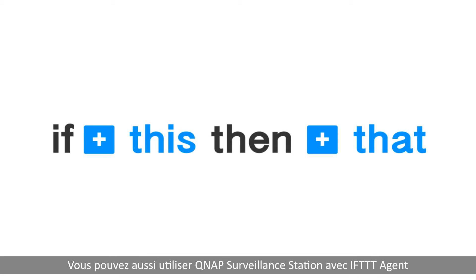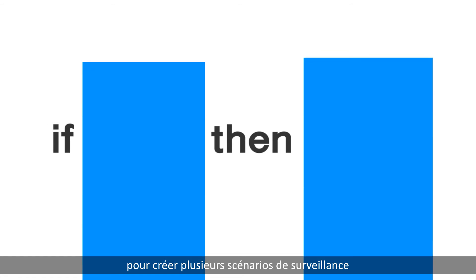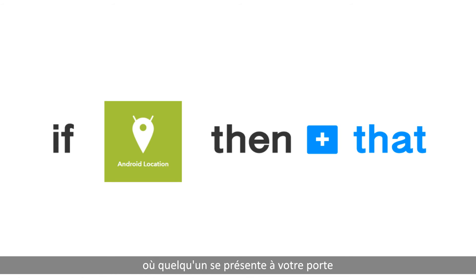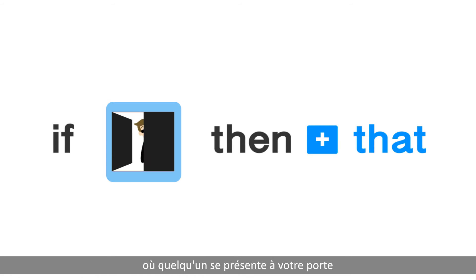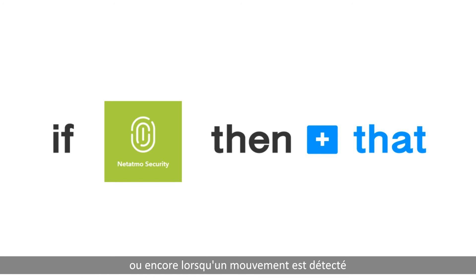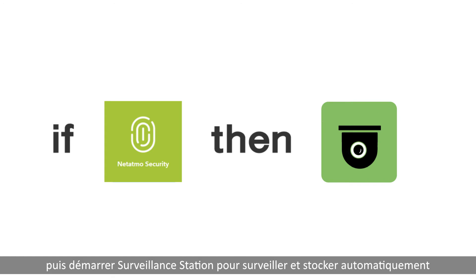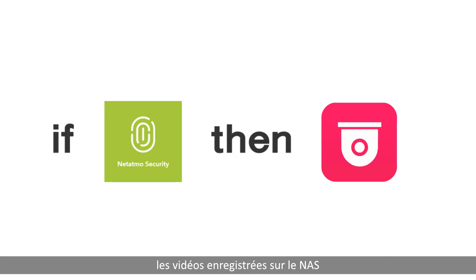You can also use QNAP Surveillance Station with IFTTT agent to create several surveillance scenarios, such as when you leave home, when someone is at the door, or when any motion is detected — then start Surveillance Station to monitor and automatically save recorded videos to the NAS.